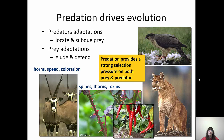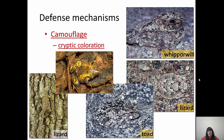Predation provides strong selection pressure on both predator and prey. If predators get too good at catching prey, they'll run out of prey. If prey get too good at eluding predators, predators die out. So they co-evolve together. Other defense mechanisms include cryptic coloration — the wibber wool lizard, toad, and other lizards all blend into their background, making them very difficult to see.